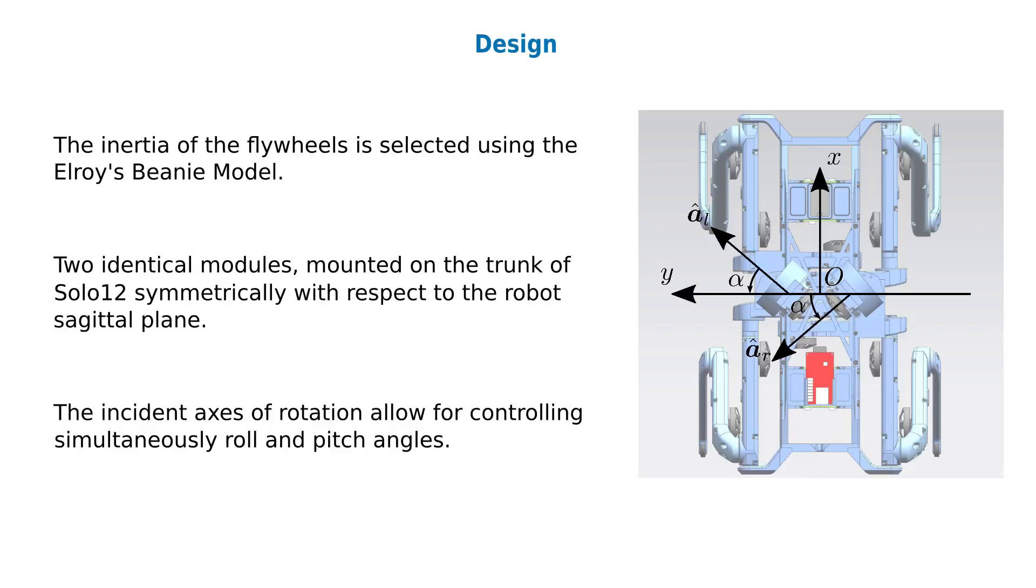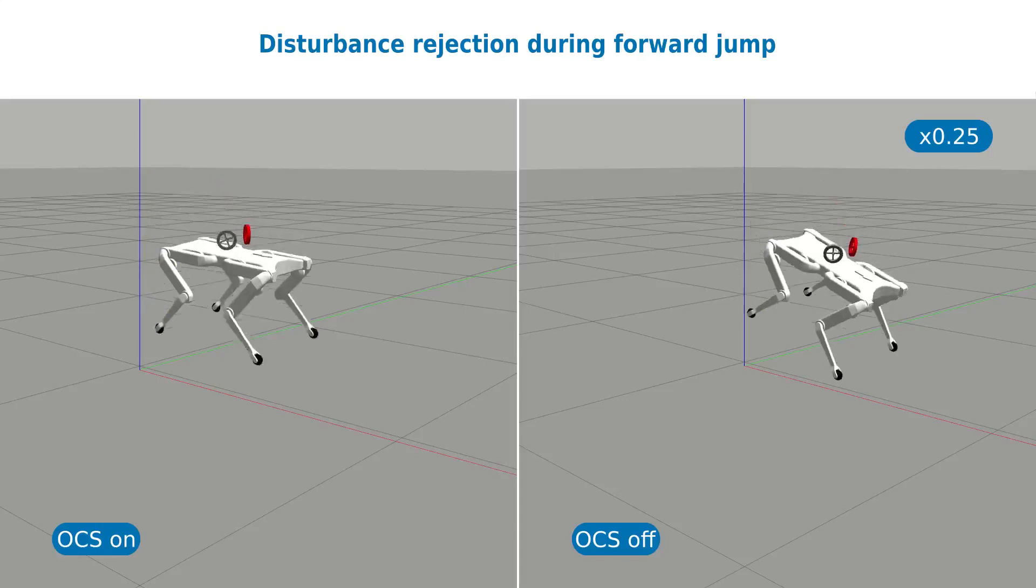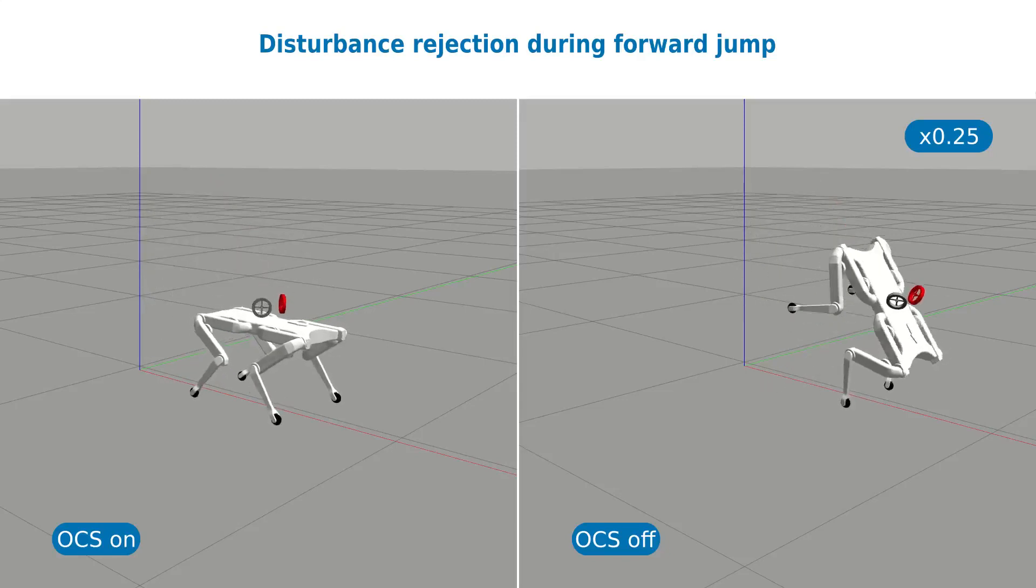To demonstrate the effectiveness of the approach, we show three simulations. During the flight phase of a forward jump, an external moment perturbs the maneuver. Our system is able to zero the orientation error and let the robot land in a safe configuration.